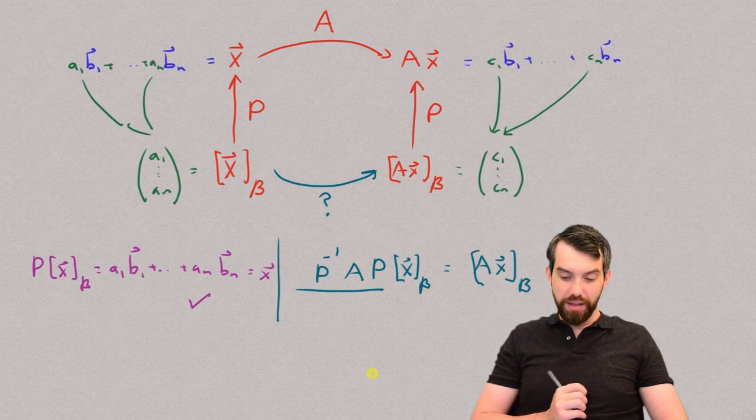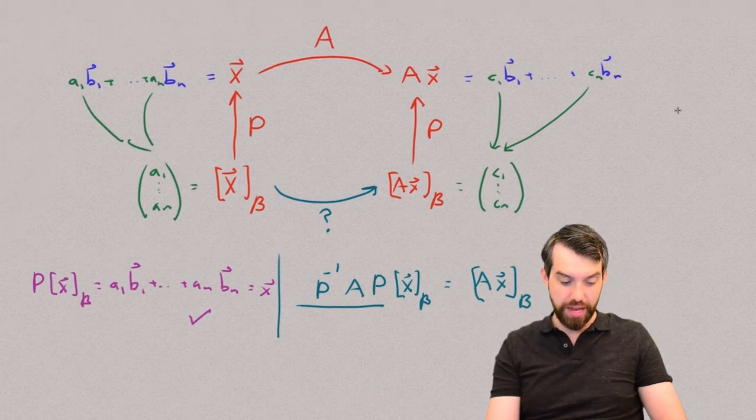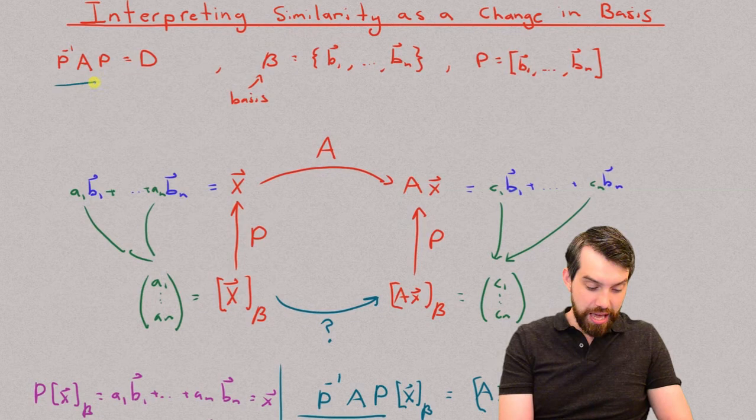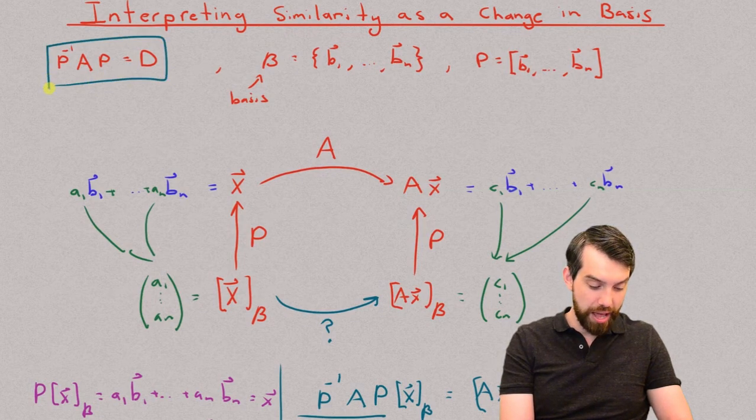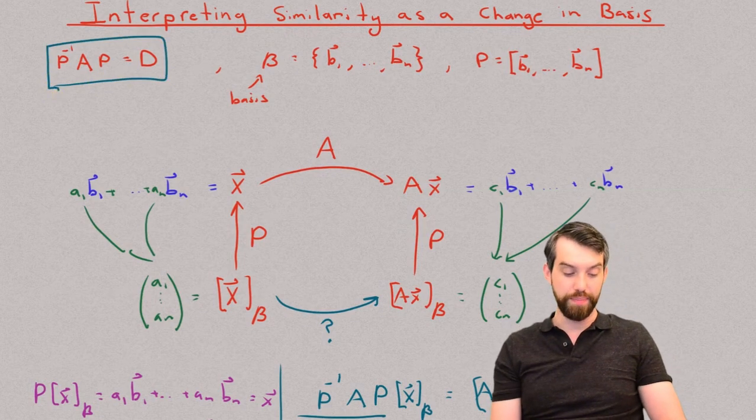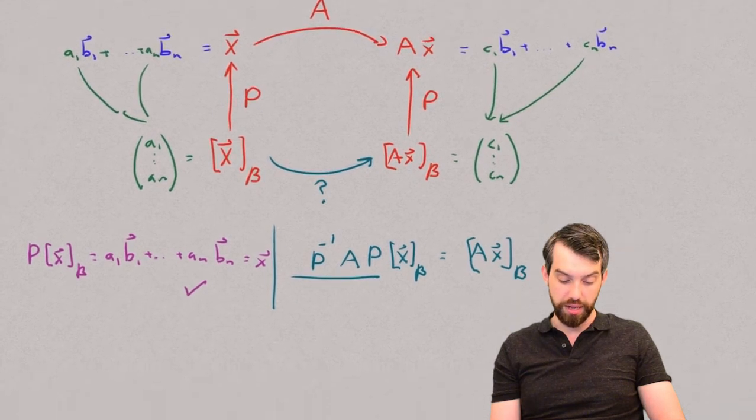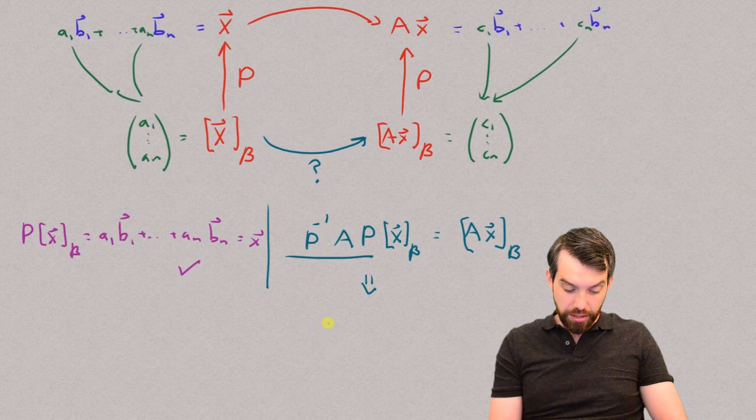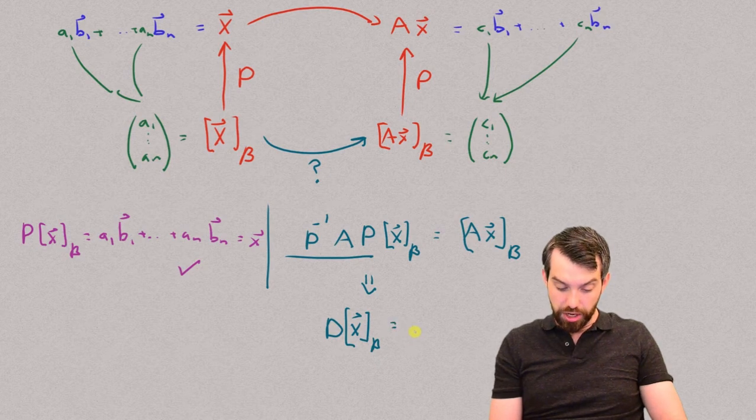And then, finally, we had all the way at the beginning that by a similarity relationship, the P inverse AP, that's exactly what I have, was just equal to this matrix that I denoted by D. And so my final conclusion here is going to be able to say that D times x written inside of the B basis, it's just going to be equal to Ax written in terms of the B basis.